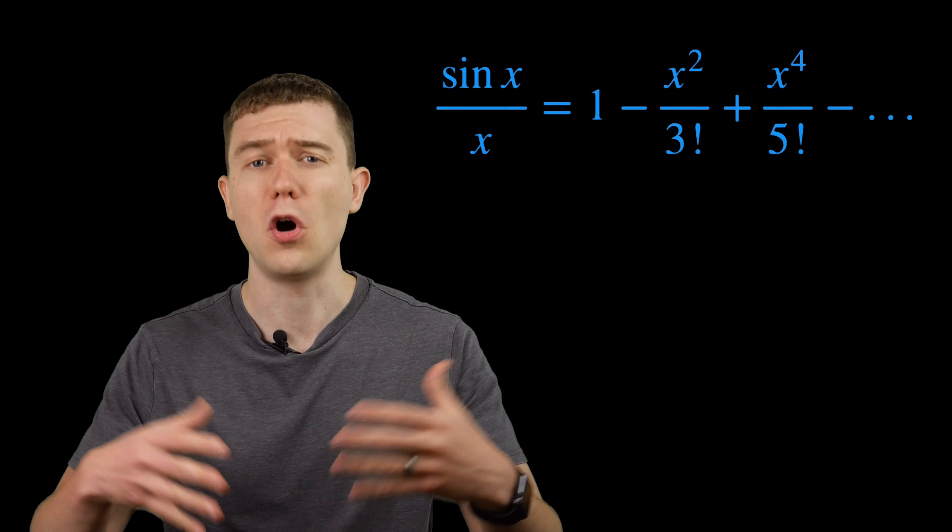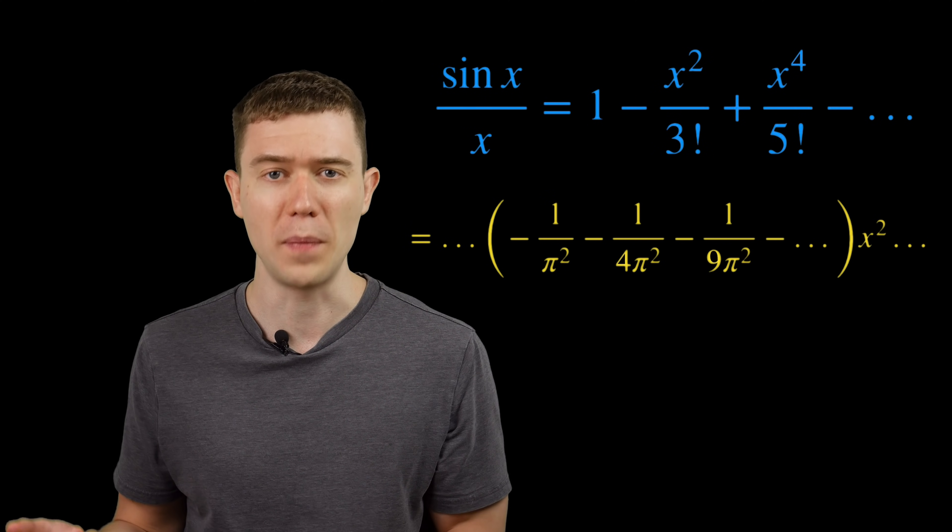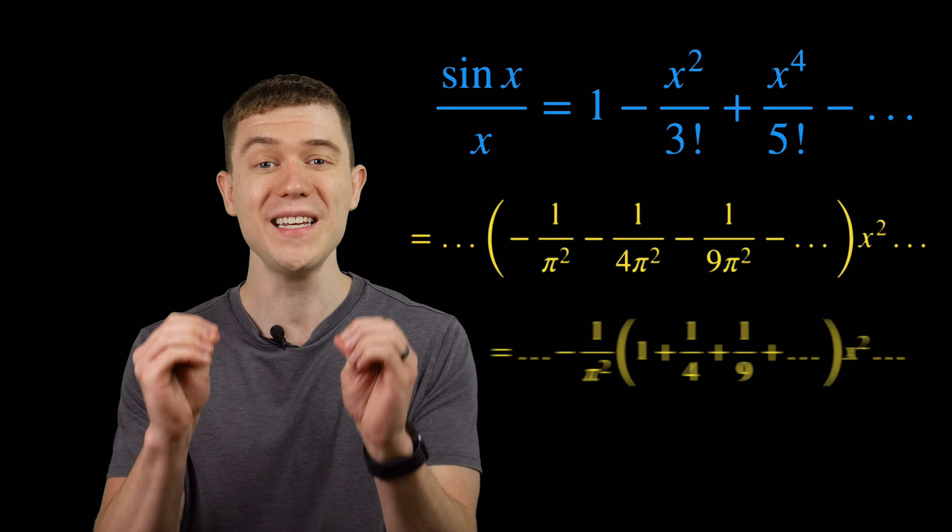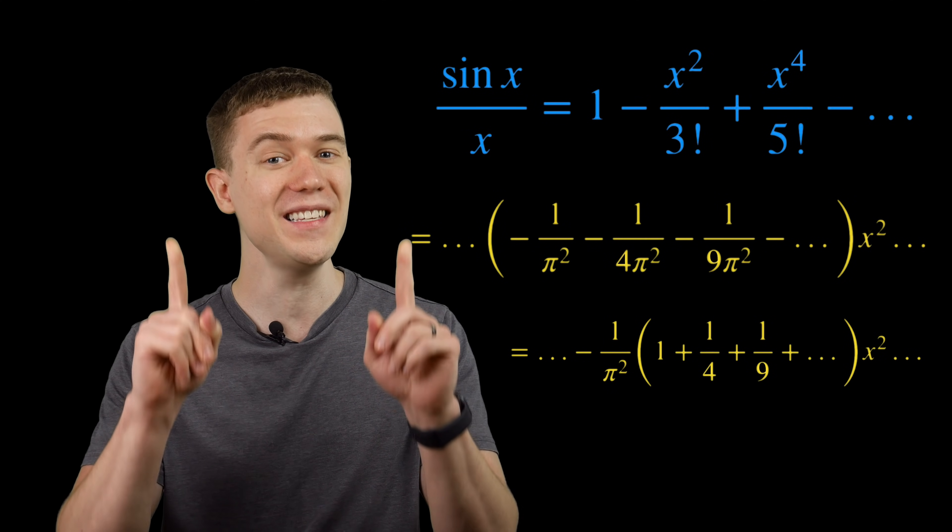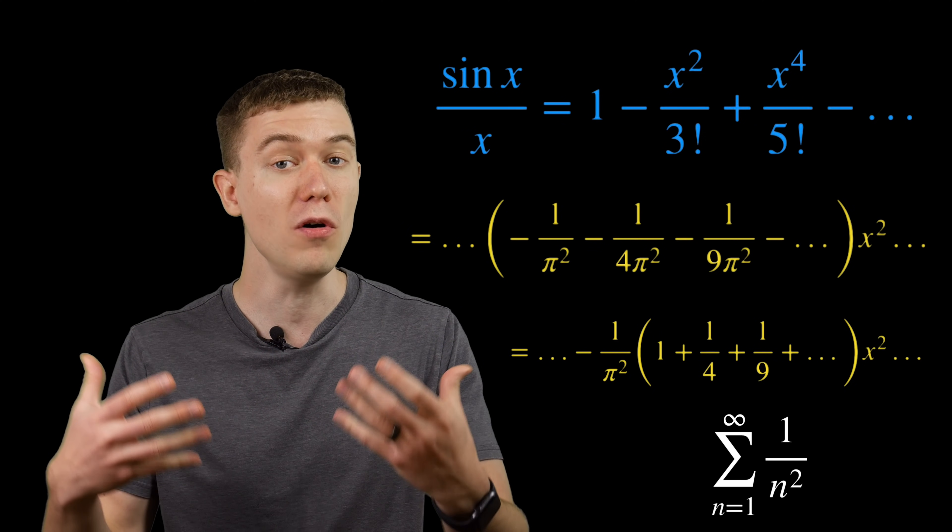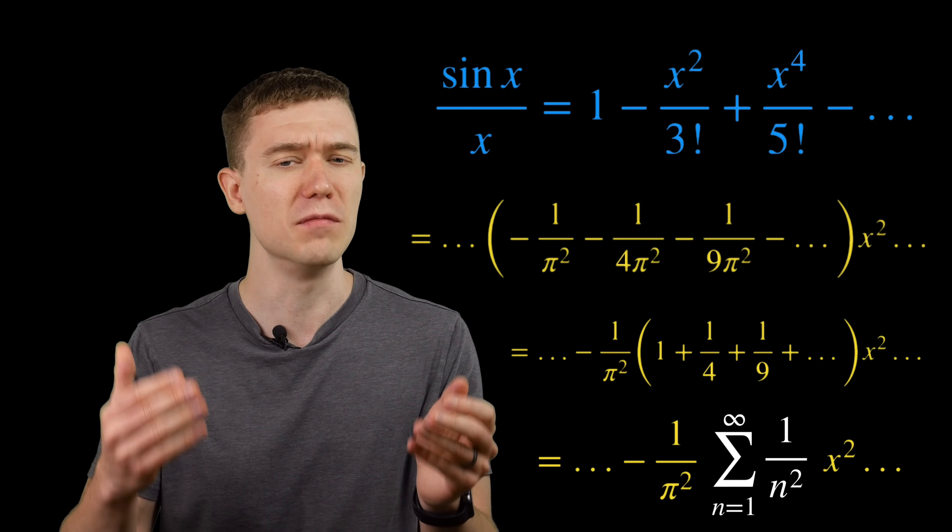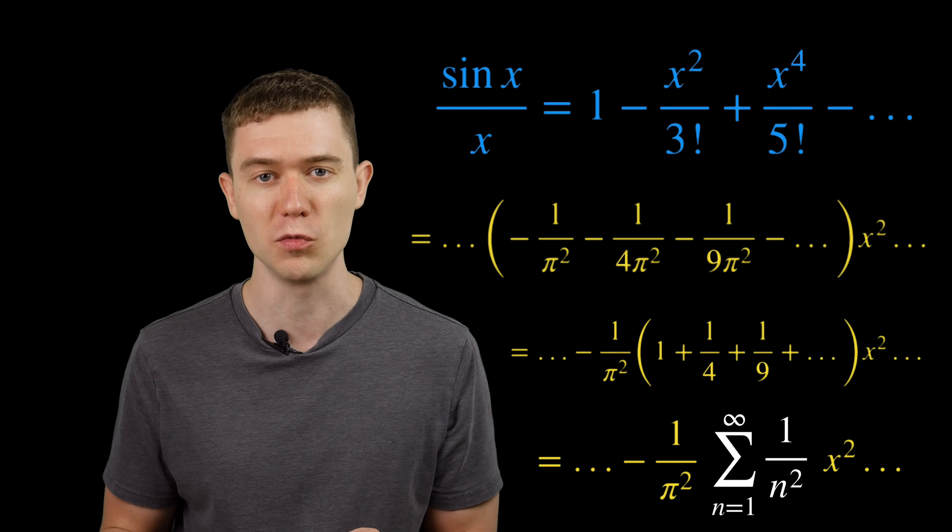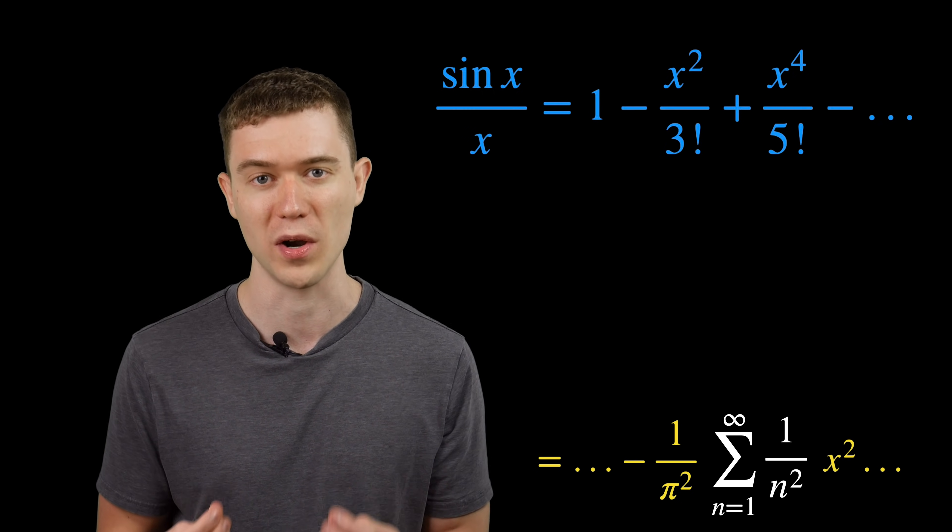So the coefficients all have a negative, they all have an over pi squared. Factor out the minus 1 over pi squared. And what we'll see is that coefficient is the sum we were actually asking about in the first place. So the coefficient of x squared is minus 1 over pi squared times the sum from n equals 1 to infinity of 1 over n squared.